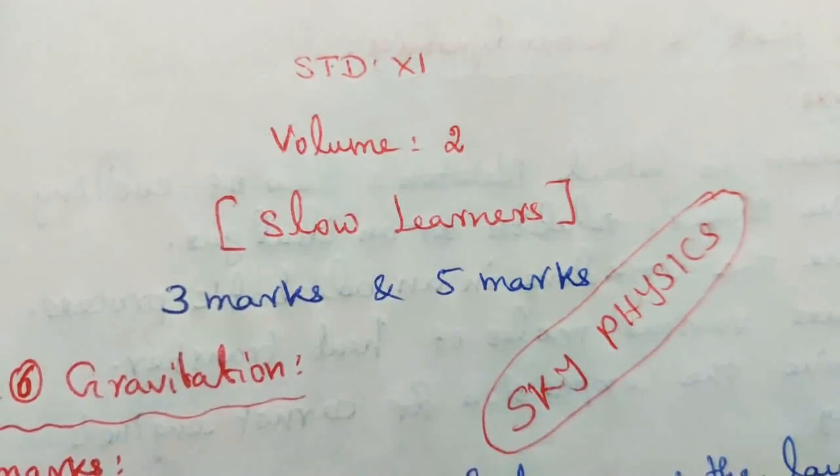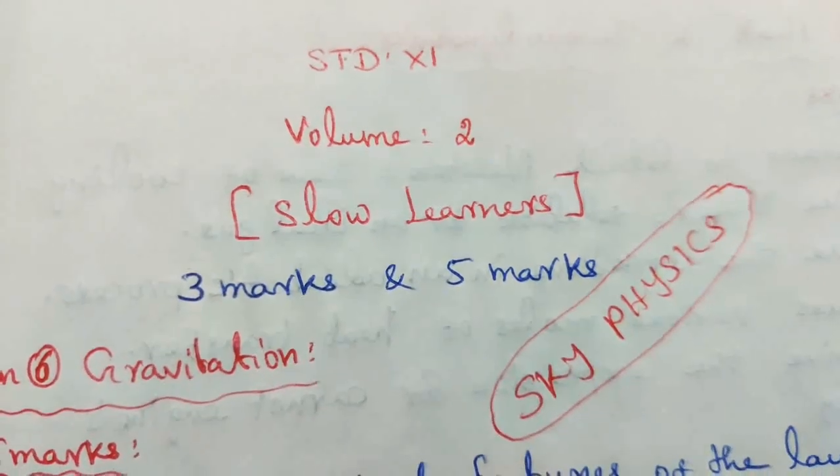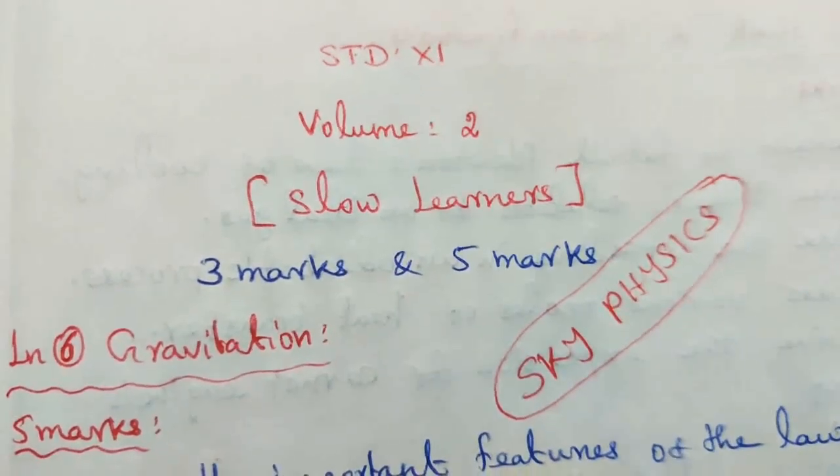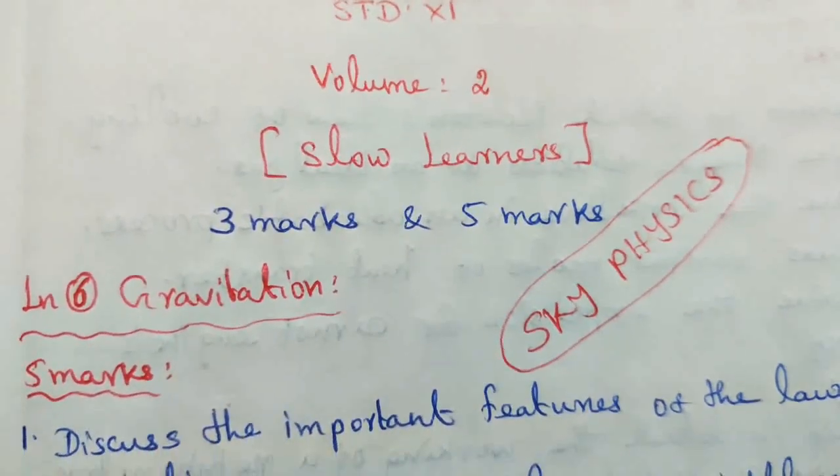Learn Standard Volume 2, slow learning has gone a topic, 3 marks and 5 marks. Lesson 6 Gravitation, 5 marks.